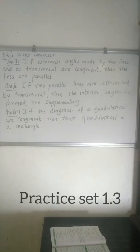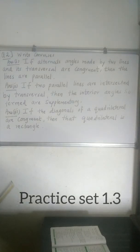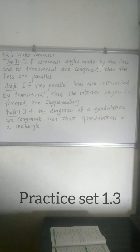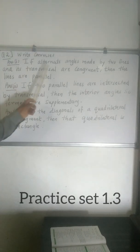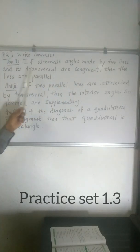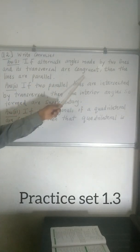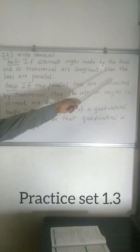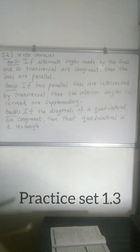Question 2: Write the converse of the following statements. First: 'The alternate angles formed by two parallel lines and their transversal are congruent.' The converse is: If the alternate angles made by two lines and their transversal are congruent, then the lines are parallel.